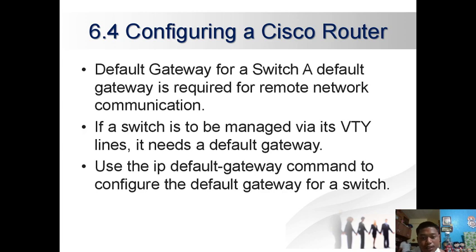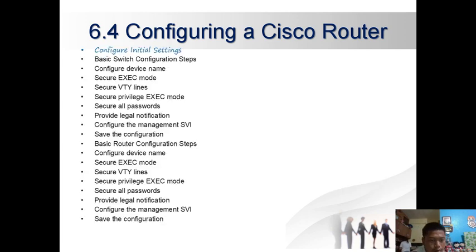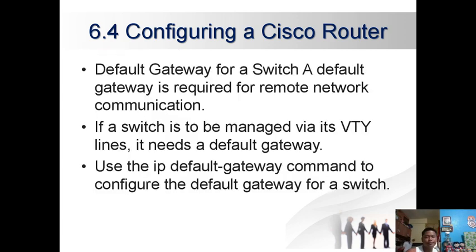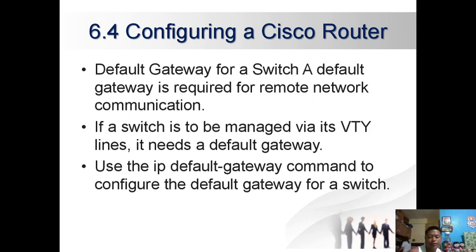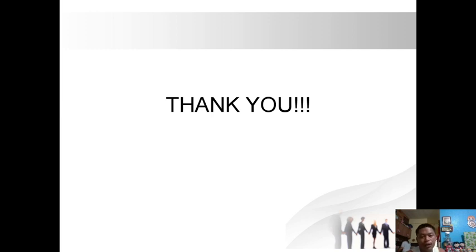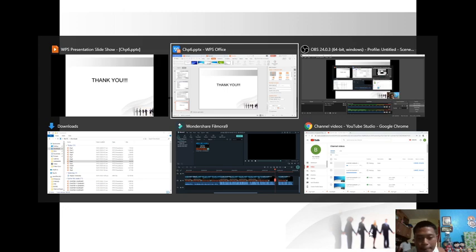Default gateway for a switch: a default gateway is required for remote network communication. If a switch is to be managed via its VTY lines, it needs a default gateway. Use the 'ip default-gateway' command to configure the default gateway for a switch. That's all for Chapter 6 — I hope you learned something from my blog. Thank you, bye!